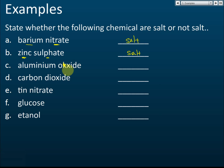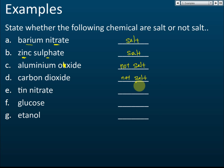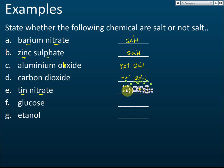Aluminium oxide — it is not a salt, because all oxides are not salts. Carbon dioxide — it is not a salt because it is a covalent compound, and salt must be an ionic compound. Tin nitrate — it is a salt; nitrate comes from nitric acid and tin is a metal ion, so the positive ion is a metal ion and the negative ion comes from an acid.